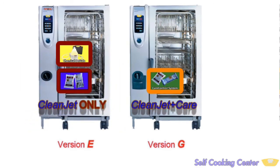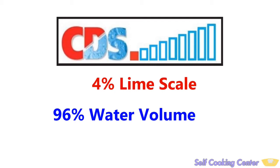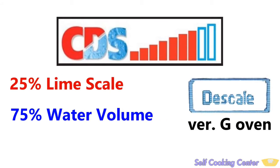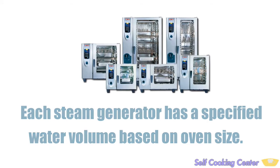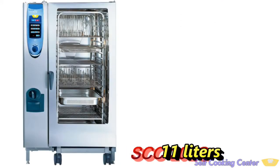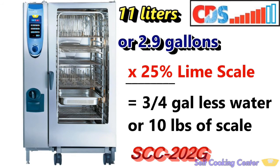It would be just dandy if there were no red bars and 100% water volume in the oven, but that will rarely be the case. Each red bar is an indicator of many thin layers of scale stacked onto each other that must be removed. At seven bars, 25% of a steam generator's rated water volume is occupied by lime scale — that's when the version G oven makes the descale program available. At eight bars, the generator is nearly 30% scaled up and calc check displays. These percentages are all relative to the size of an oven. Countertop models start out at slightly more than one gallon of water volume, ranging up to nearly two gallons. A floor model SCC-202G will hold nearly three gallons of water. At seven bars on the CDS graph — 25% lime scale buildup — that equals three quarters of a gallon less water, offset by nearly 10 pounds of scale.